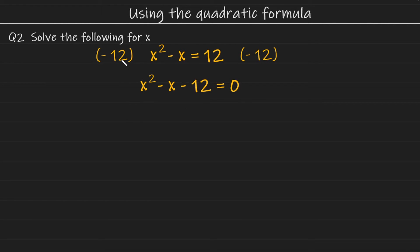As you can see, we've subtracted 12 from both sides of the original equation. And it's left us with x squared minus x minus 12 is equal to 0. Now we can use the quadratic formula to solve this one. So let's go ahead and do that.